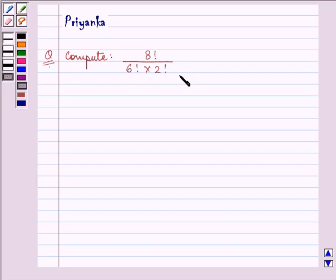Now in this question we will be using the concept of factorial notation in order to proceed on with our solution. Here it is 8 factorial divided by 6 factorial multiplied by 2 factorial.